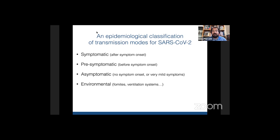How can this reduction be done? This question implies some understanding of how the virus spreads. We propose an epidemiological classification in terms of four categories: one is symptomatic — direct or indirect infection from individuals that have already shown symptoms; the second is pre-symptomatic — infection from individuals who will show symptoms in the future but are infectious right now; third are fully asymptomatic individuals who never develop symptoms but are nevertheless infectious; and fourth is environmental — delayed transmission through fomites and ventilation systems where you cannot really trace who infected you.